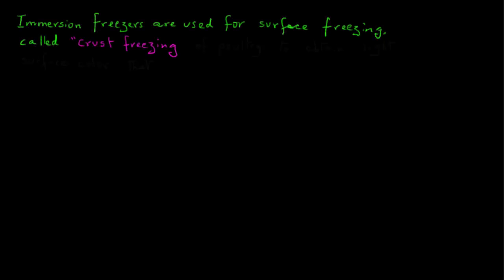Another example of the use of this type of system is for what is called crust freezing, which is done for poultry to obtain a light colored product. For this purpose, the crust or outer layer of chicken is frozen in a brine tank and later finished frozen in a blast freezer.